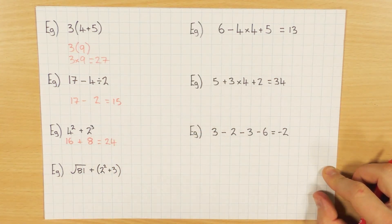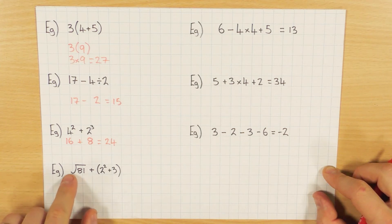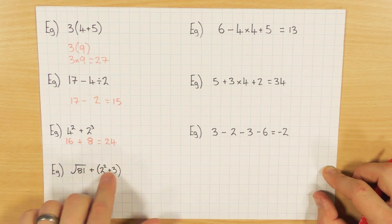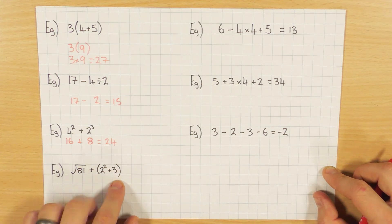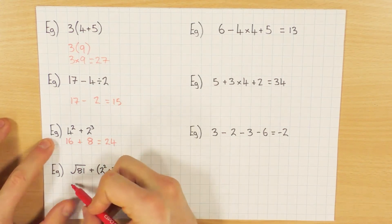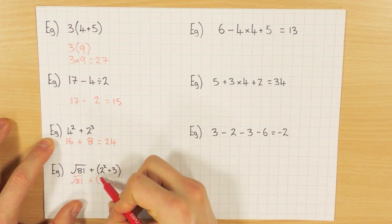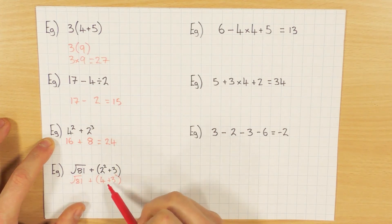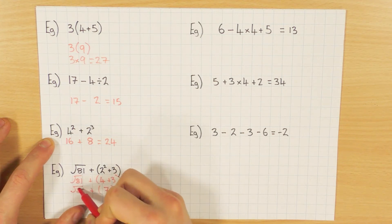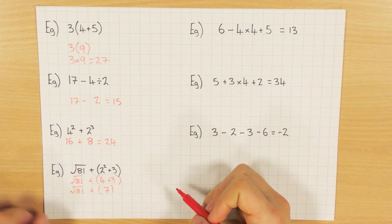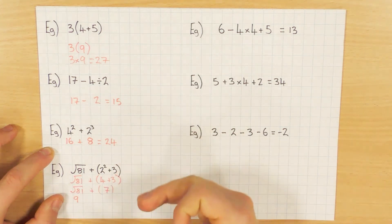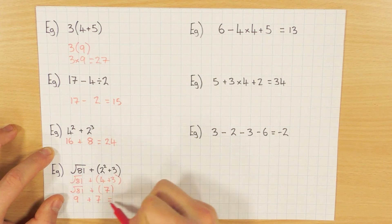The last example to illustrate BIDMAS: a square root is an indice, and I've got two additions and some brackets. Brackets come first, so I work out what's inside. Inside the brackets I have an indice and an addition — the indice comes first. So I leave the square root of 81 and do 2 squared which is 4, plus 3, giving 7 inside the brackets. Now on the outside I have an addition and an indice: square root of 81 is 9, plus 7 gives 16.